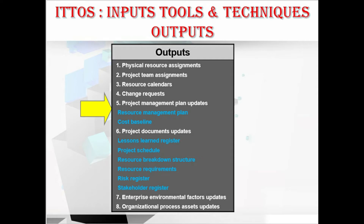For outputs, we have physical resource assignments, project team assignments, resource calendars, change requests, and project management plan updates — consisting of the resource management plan and cost baseline. We also have project documents updates — consisting of the lessons learned register, project schedule, resource breakdown structure, resource requirements, risk register, and stakeholder register — plus EEF updates and OPA updates.